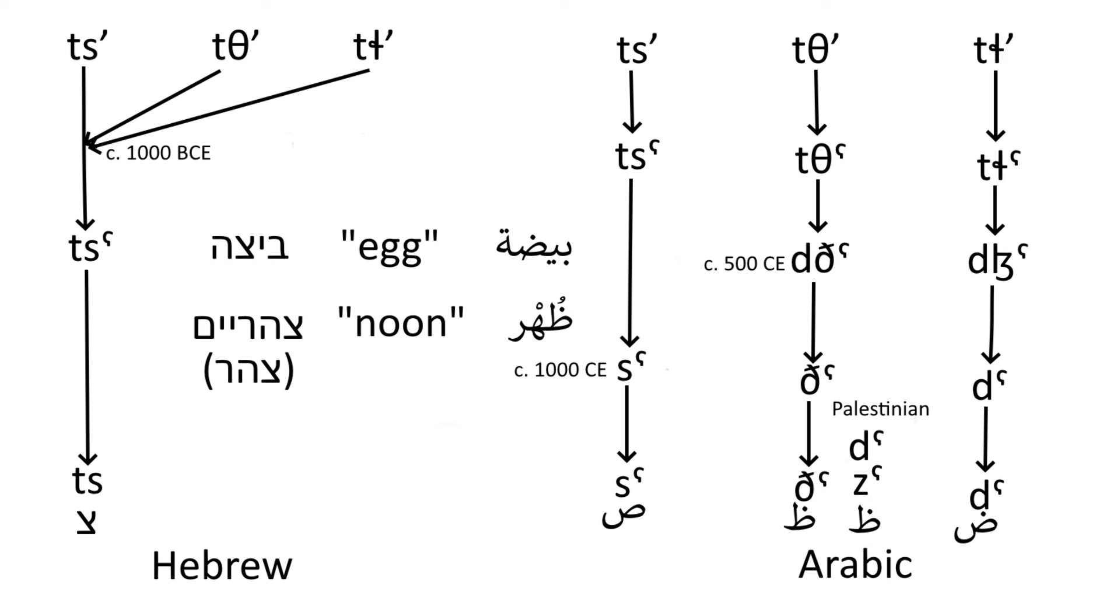Finally, we're done with the Semitic sibilants. Let's move on to the final fricatives. Proto-Semitic had the uvular ġ and pharyngeal ʕ. Hebrew wrote these phonemes with the same letter, Ayin.